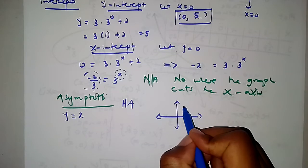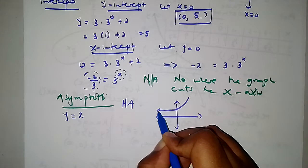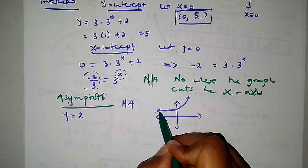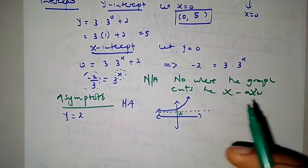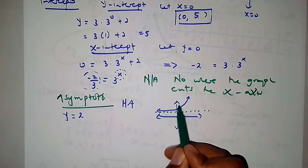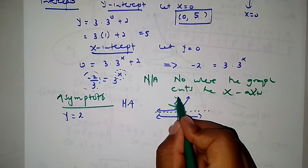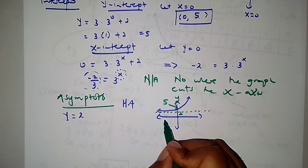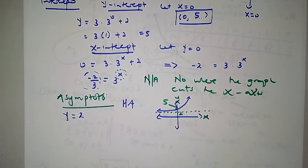So the y-intercept is at 5 right here. I was supposed to draw the asymptote first — y is equals to 2, here it is. The graph approaches y equals to 2 but never touches it. Where the graph cuts the y-axis, that's a 5 right there. And obviously, the graph does not cut the x-axis, so this is our graph.